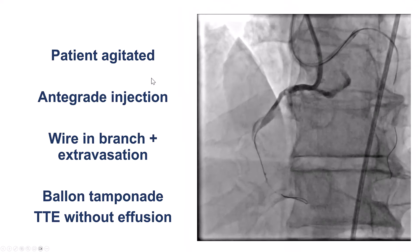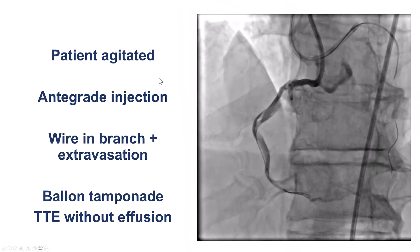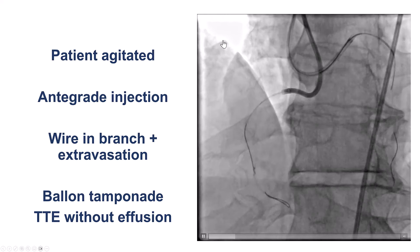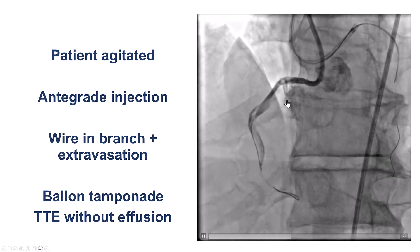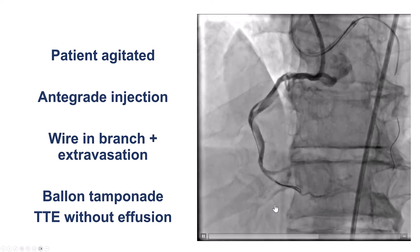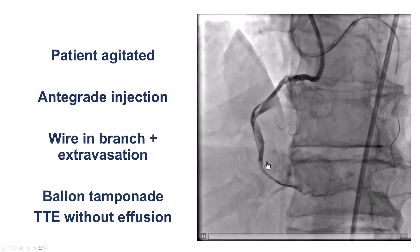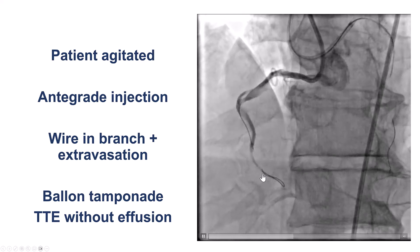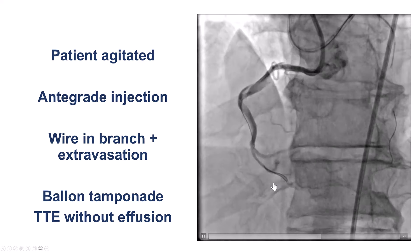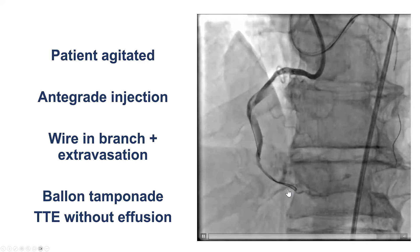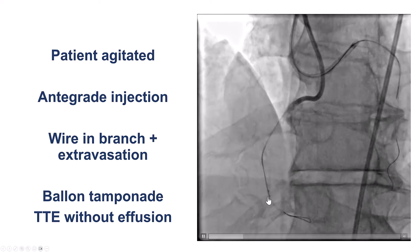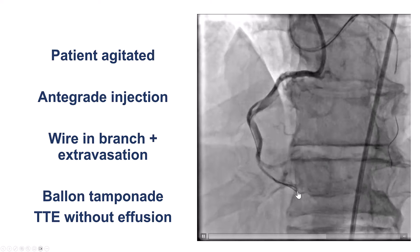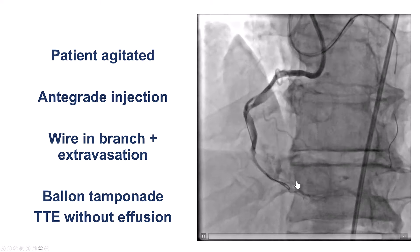At this point the patient did become agitated and we were a little concerned whether we had an issue, so we did a brief contrast injection, which of course destroys the options for reentry. What it showed us is that we were actually not into the distal RCA, but our stingray balloon was more into an acute marginal branch, and our attempts to cross had caused a small contrast extravasation into this acute marginal branch.